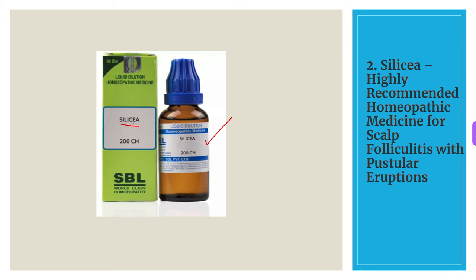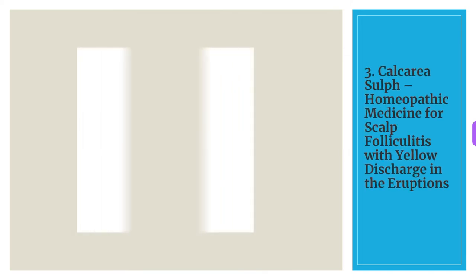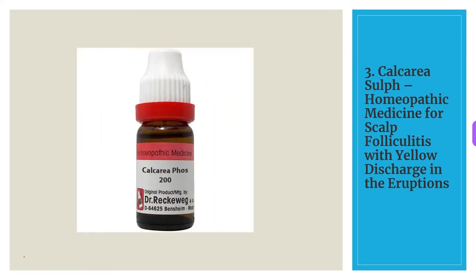The third medicine for scalp folliculitis is Calcarea Sulph. This homeopathic medicine is indicated for scalp folliculitis with yellowish discharge in the eruptions. The eruptions heal slowly and form a yellowish crust. This remedy is very beneficial for scalp folliculitis in children.